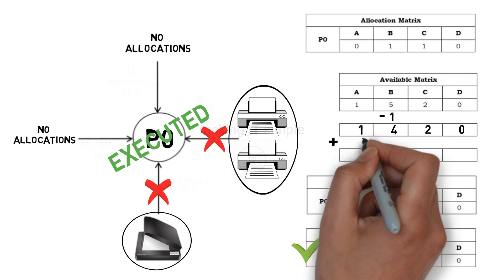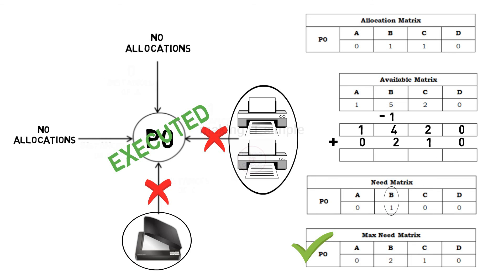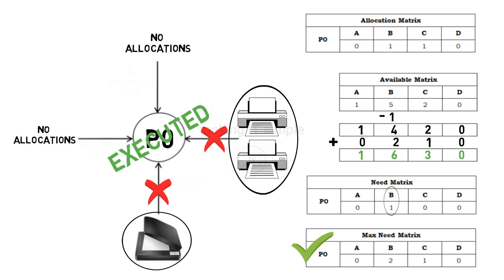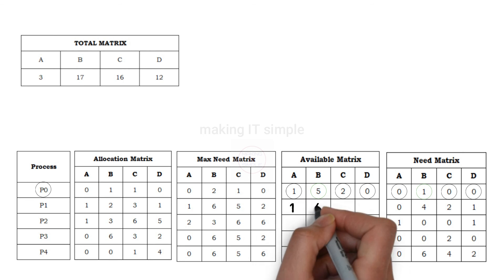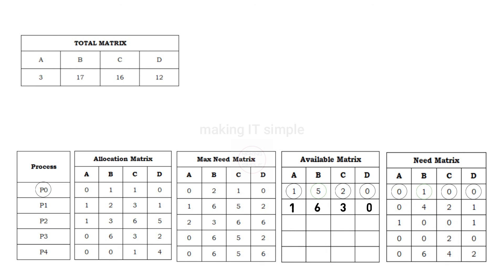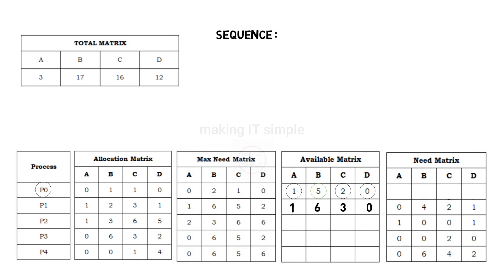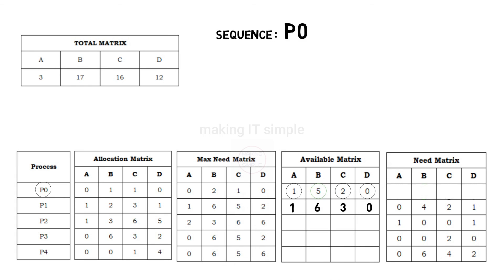So those released resources get added back to the available matrix: plus 0, plus 2, plus 1, and plus 0, giving us an updated available matrix of 1, 6, 3, and 0. The updated matrices are now set and P0's need is completed. We will maintain a sequence in which processes get executed — as P0 is executed first, it will be added first in the sequence.